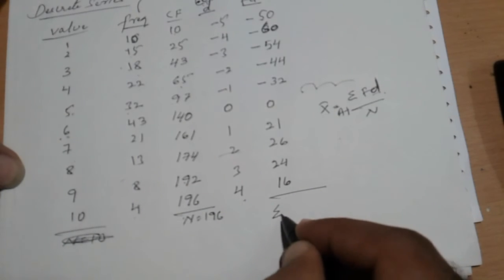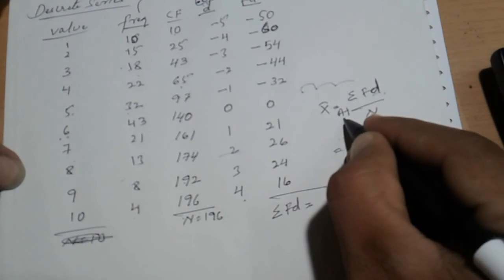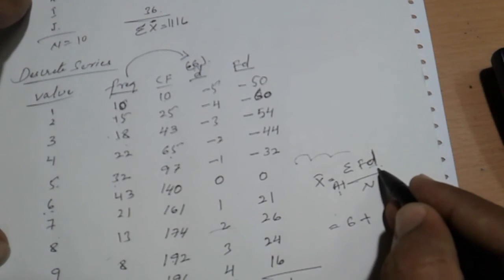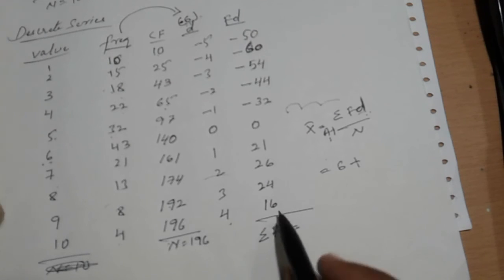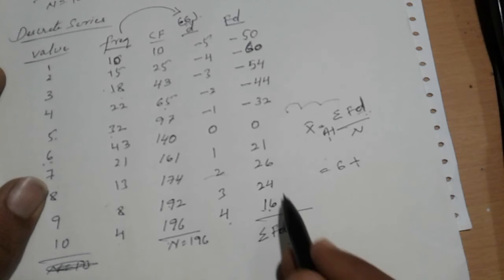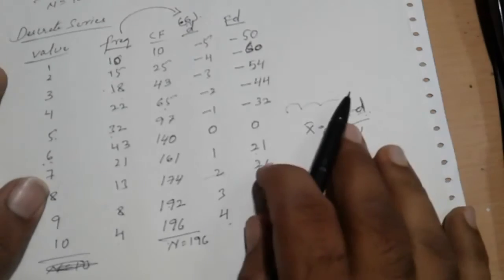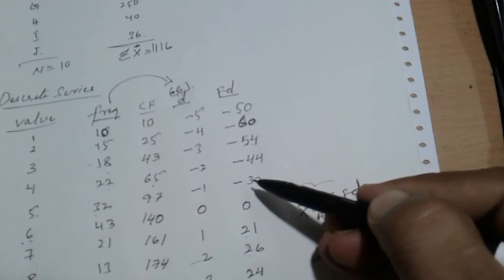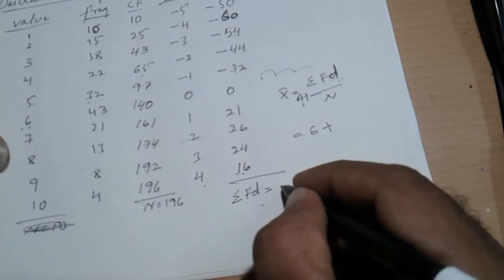Now add this one. Sigma - sigma means total. F into d is equal to: first add the 16 plus 24 plus 26 plus 21: 87. Now minus: 50, 100, 160, 200, 230, 238, 240. Plus 87 minus 240. Overall, how much are we getting? We are getting minus 153.